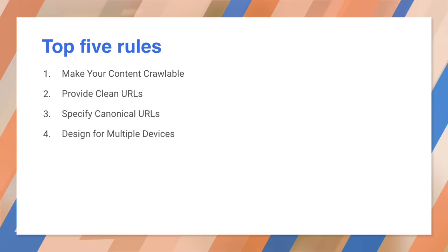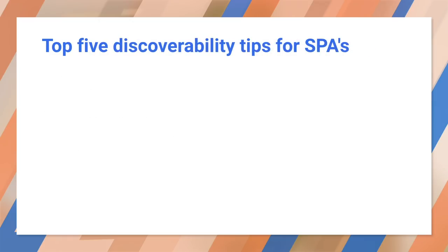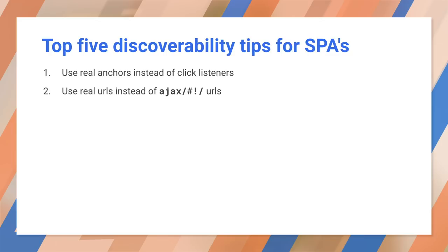We've already covered the first rule, make your content crawlable. That means rendering it so the crawler can find it. If you're writing a single-page app, the top five rules become these top five tips. Many developers provide navigation links with a hash for the URL and use a click listener instead. These should point to actual paths in your app to trigger changes.